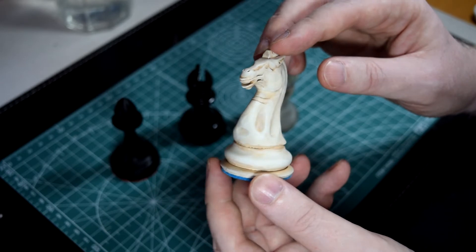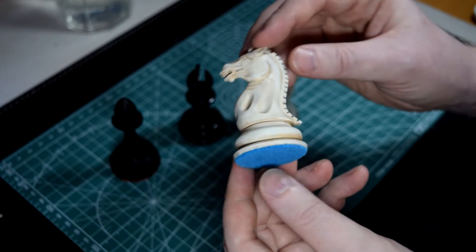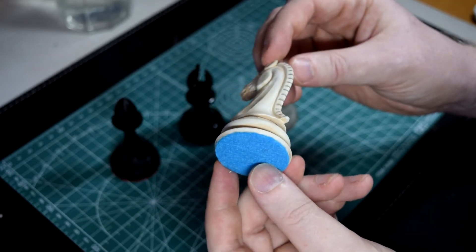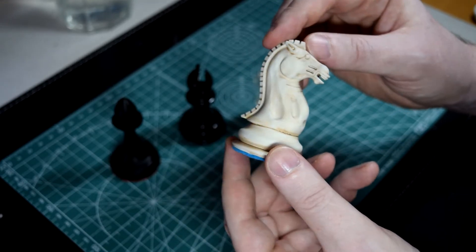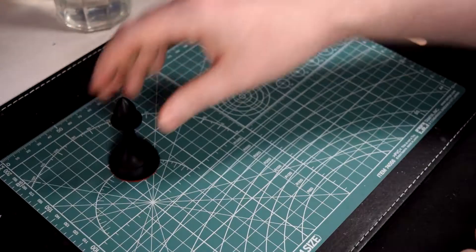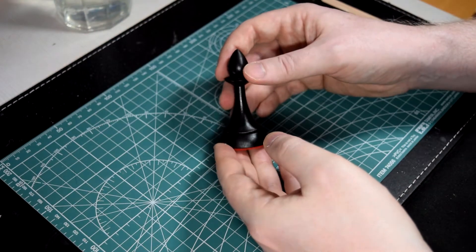And finally, this is the ivory style or bone style knight from the Staunton set, and this is achieved with oil paints. So let's look at how you get this satin black finish.